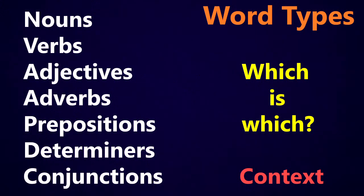Also, if you're trying to write or speak English and want to use a word but you're not quite sure which form to use, you can use the same clues or information to figure out which form of the word you should be using in the sentence. In this video, we're going to go through these clues to understand word types in context.